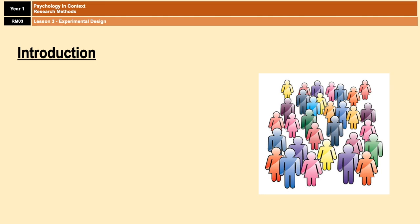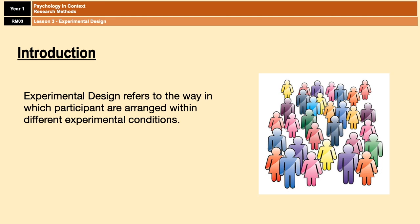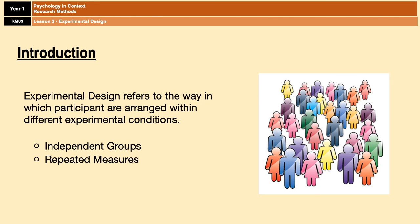Experimental design is all about the way participants are used in experiments. Specifically, it refers to the way in which participants are arranged in experimental and control conditions. There are three different ways participants can be arranged: independent groups, repeated measures, and matched pairs.